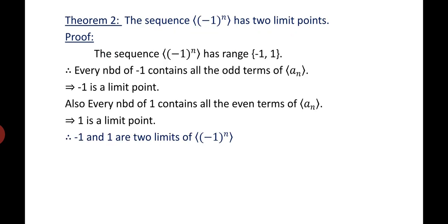The second theorem says the sequence (-1)^N has two limit points. We know (-1)^N has two values: -1 and +1. We get -1 when N is odd, and +1 when N is even. Therefore, the range of the sequence is {-1, 1}. Every neighborhood of -1 contains all the odd terms of A_N, hence -1 is a limit point. Also, every neighborhood of +1 contains all even terms of A_N, which implies 1 is a limit point.